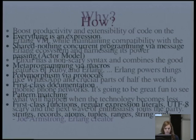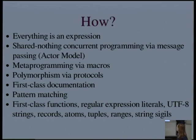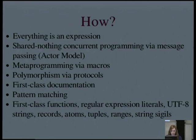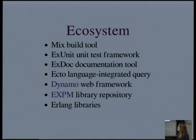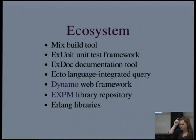How does Elixir achieve these goals? There are a lot of different features. Highlights include polymorphism via protocols, regular expression literals, UTF-8 encoded strings, and more. For a new language, it also has a well-developed ecosystem — it has everything Erlang has, plus its own build tool called Mix, a unit test framework, a docs tool, Ecto which is like LINQ for Elixir, a web framework called Dynamo, and a repository of about 110 libraries.